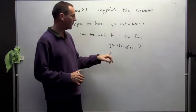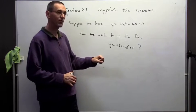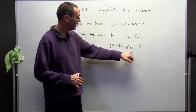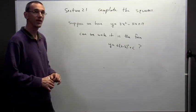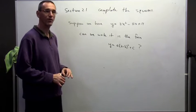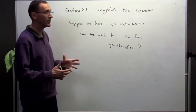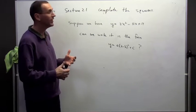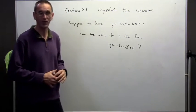Just to recap, we really like vertex form because we can immediately tell where the vertex is. The value for x is going to be h, and the value for y is going to be c at the vertex. So if we can take something in standard form and put it in vertex form, then life is going to be good. The method we're going to use is called completing the square.